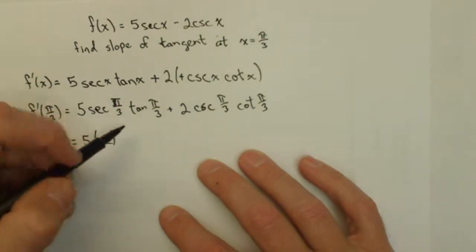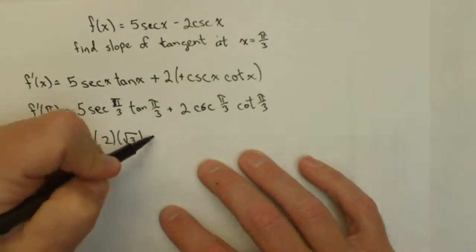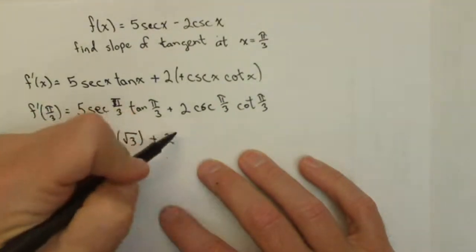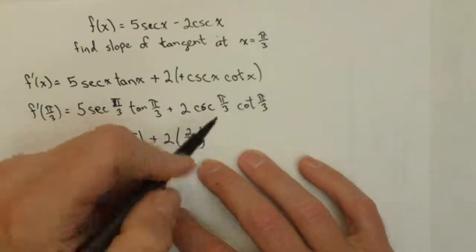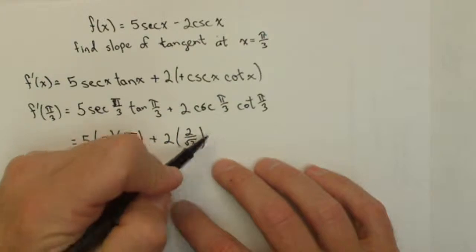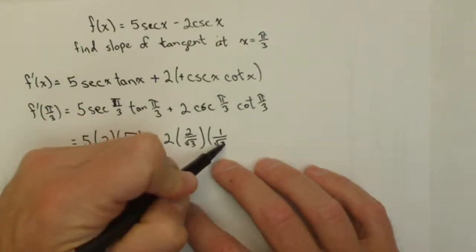tan(π/3) = √3, plus 2 times csc(π/3) = 2 times 2/√3, and cot(π/3) = 1/√3.